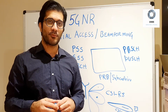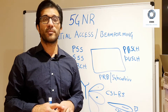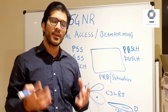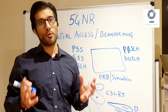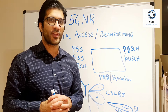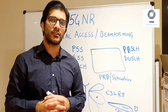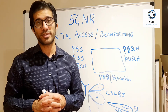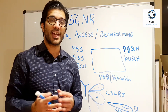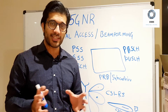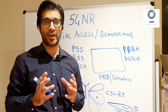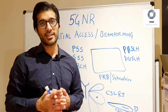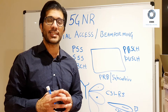For common channels — for example, common control channels and other broadcast channels used by all devices in the area — the common beam is used. For dedicated or some other particular common channels, the wide beam, or in other words beam sweeping, is used to communicate that information. With these characteristics, 5G provides better SINR and better performance than LTE, although the antenna systems are significantly more complicated.